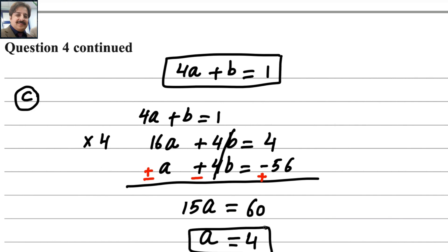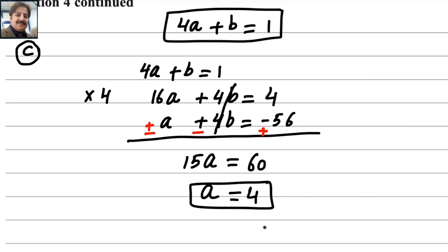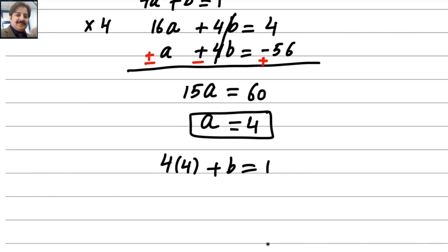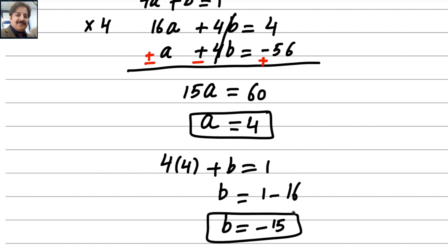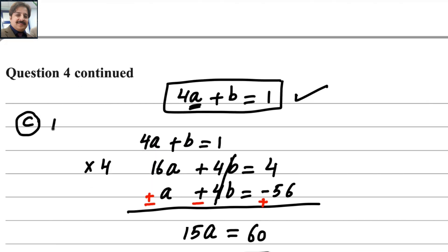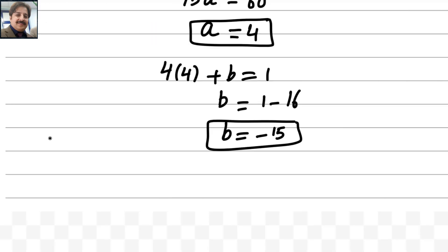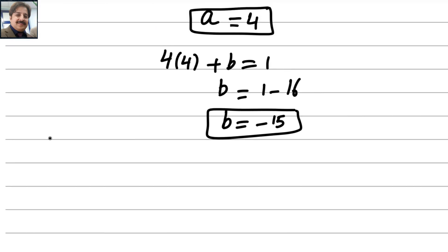Substituting a equals 4 into 4a plus b equals 1: 4 times 4 is 16, so 16 plus b equals 1, which gives b equals 1 minus 16 equals negative 15. Therefore a equals 4 and b equals negative 15.